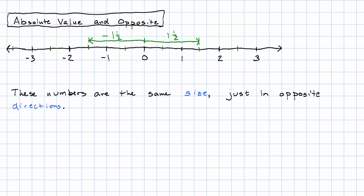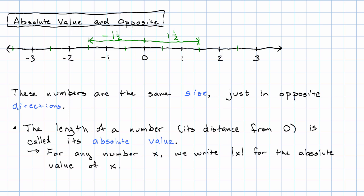That thing that they have in common, their size, or perhaps you could think of it as their length, that is called their absolute value. To indicate the absolute value of a number, we write the number inside a pair of vertical bars. And when we actually want a numeric value, we use the positive version.